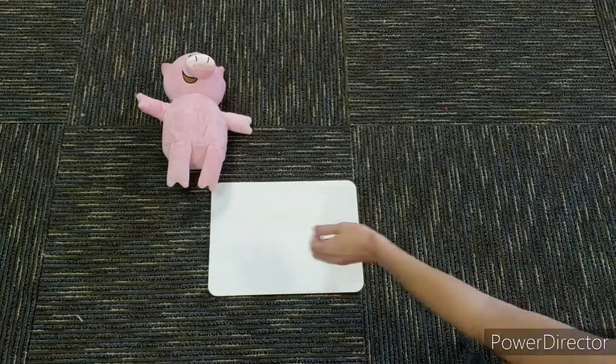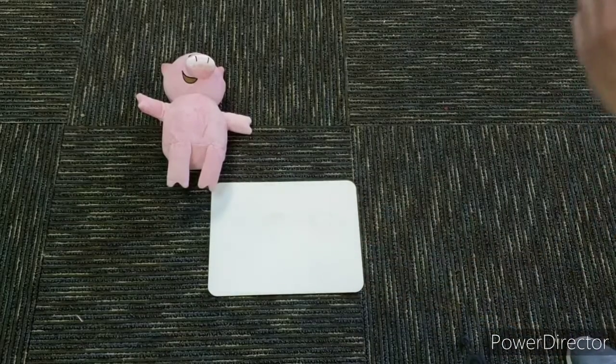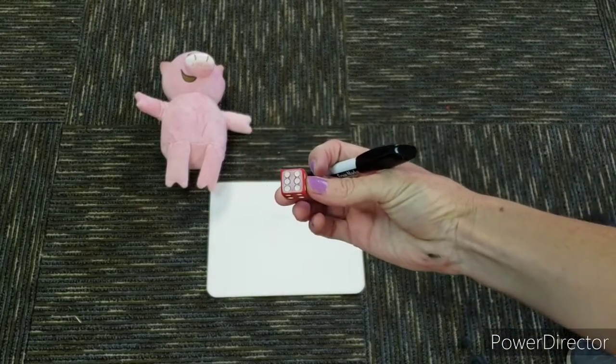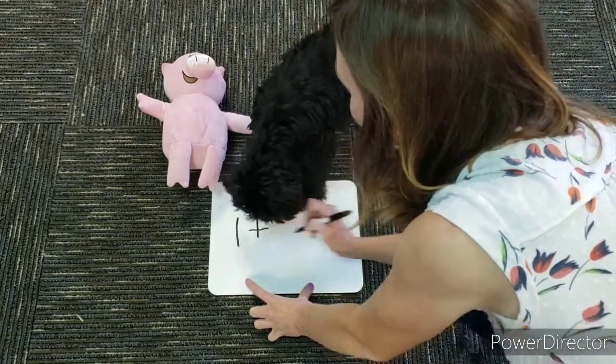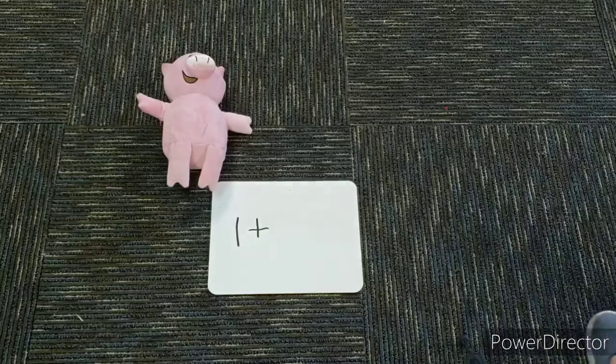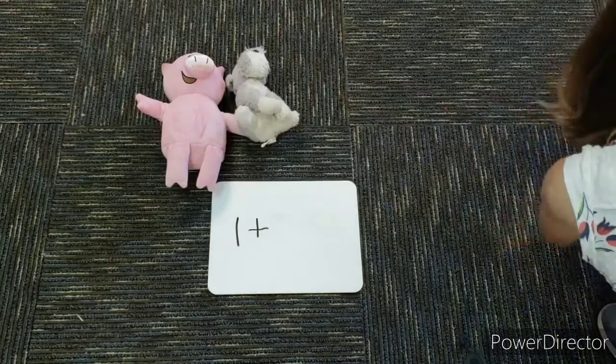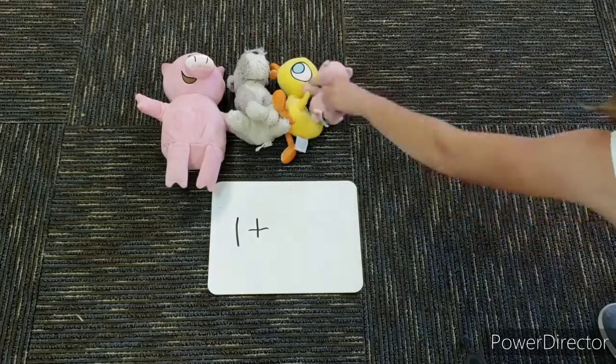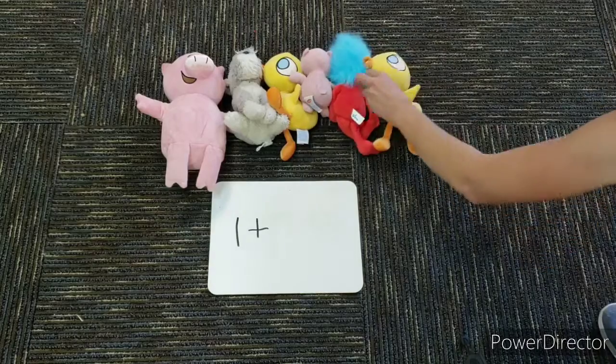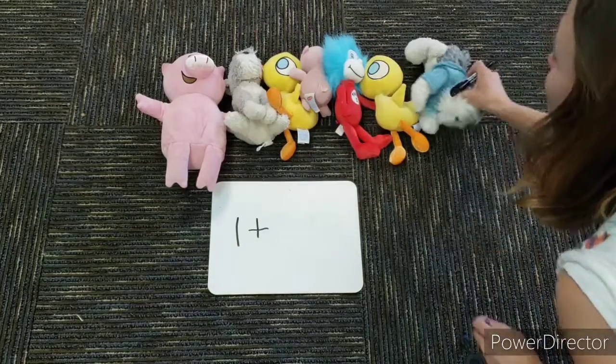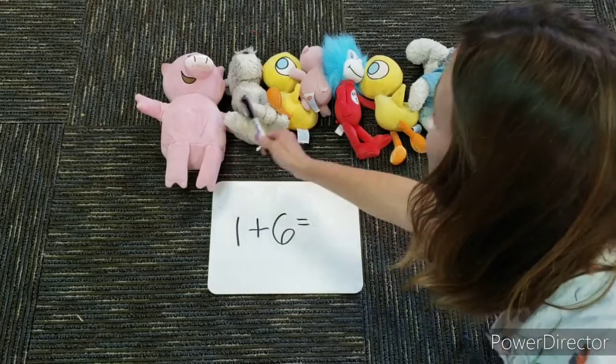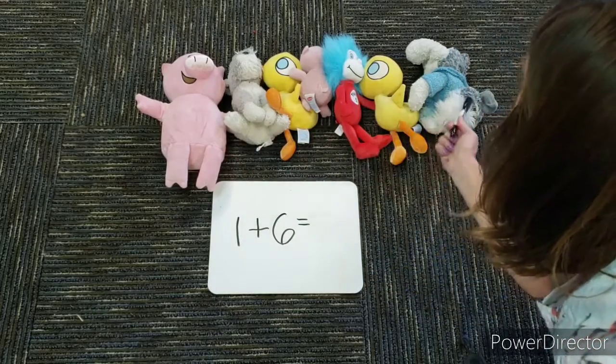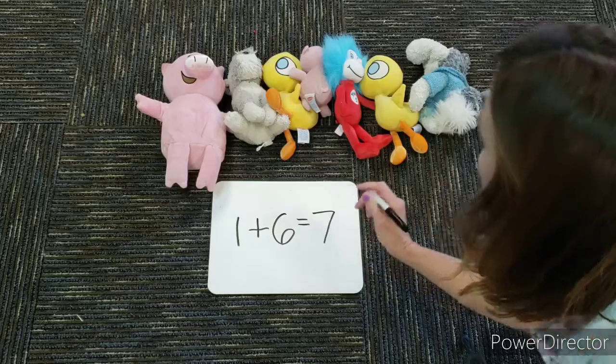Okay, so this time I'm going to roll again. And I got six. Okay, so I'm going to write one plus six stuffies. I'm going to go one, two, three, four, five, six. So now I have one, two, three, four, five, six, seven stuffies.